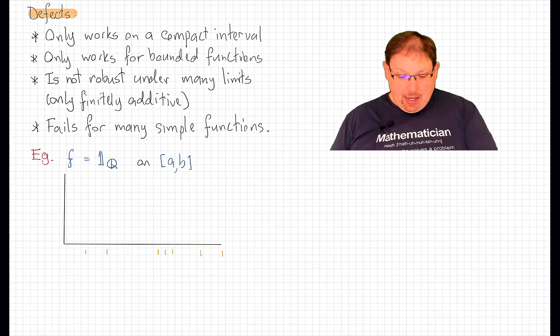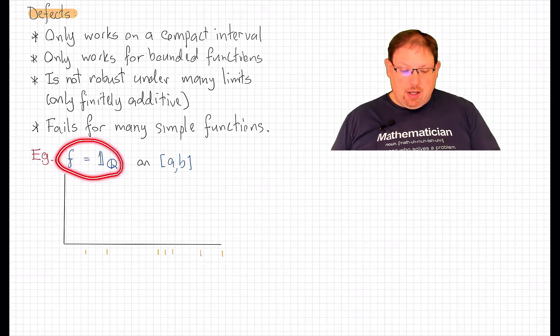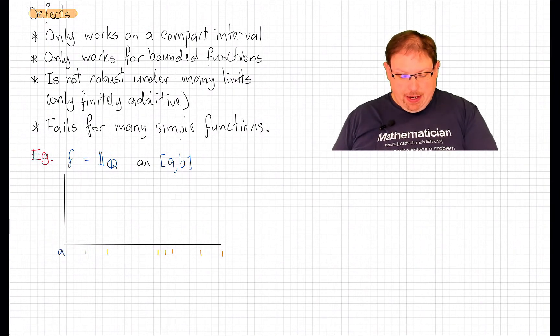Let's take a look, for example, at this function, the indicator function of the rationals restricted to some compact interval from a up to b.